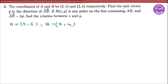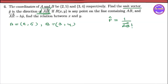If we have a unit vector, we can find a unit vector in the direction of AB. The formula for the unit vector in the direction of AB is: unit vector = AB vector divided by the modulus of AB vector.